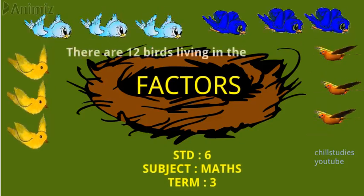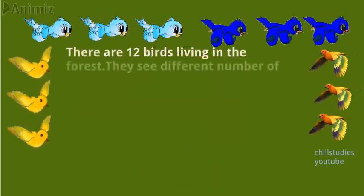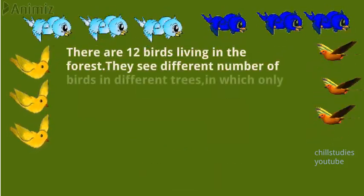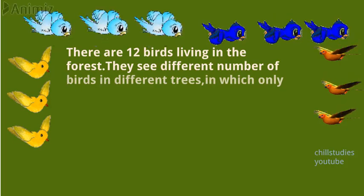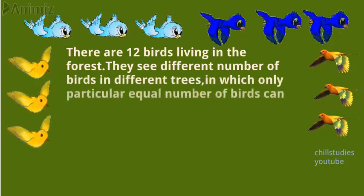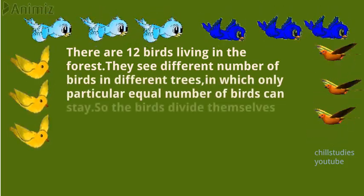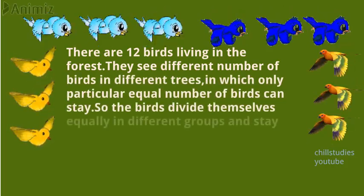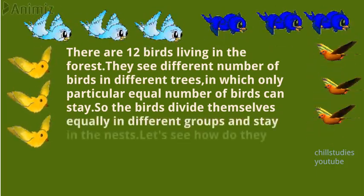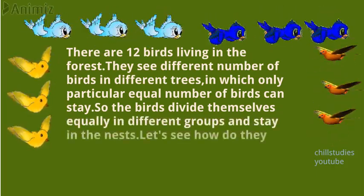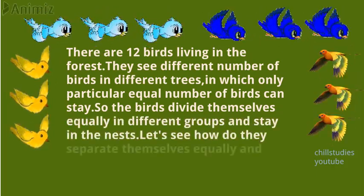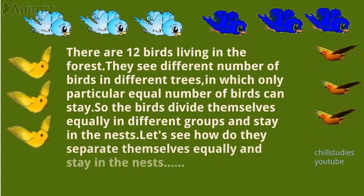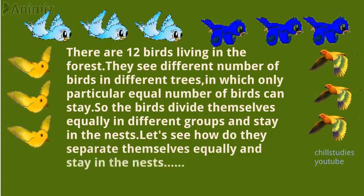Dear students, there are 12 birds living in the forest. They see different numbers of nests in different trees. In which one particular tree can an equal number of birds stay? So the birds divide themselves equally into different groups and stay in the nest. Let's see how they separate themselves equally and stay in the nest.